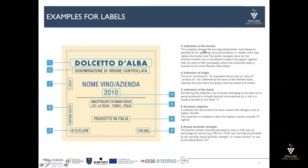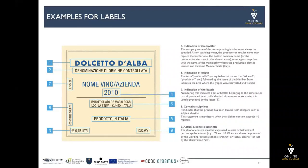Then we have the indication of the bottler. The company name of the corresponding bottler must always be specified. For sparkling wines, the producer or retailer name may replace the bottler one. The bottler company name, or the producer or retailer name, must appear together with the name of the municipality where the production plant is located, and its home member state — for example, Italy in our case.